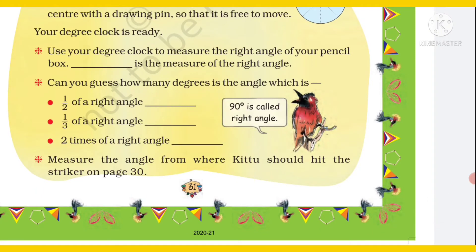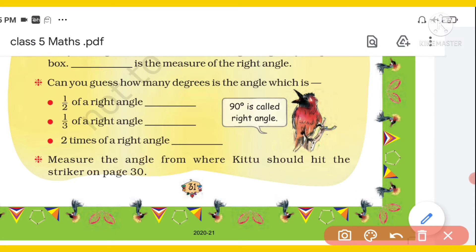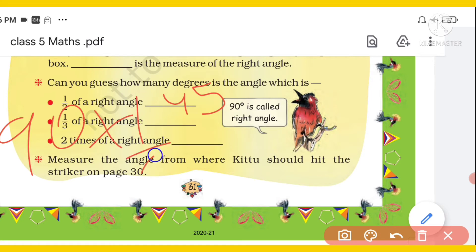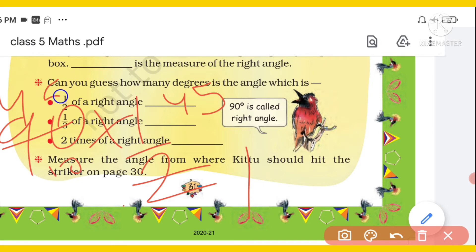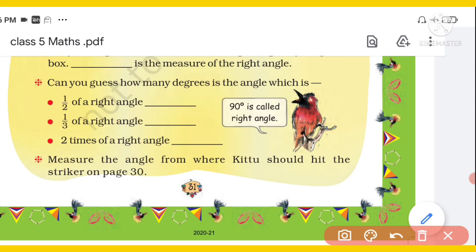Next question: can you guess how many degrees is the angle which is half of a right angle? Right angle means 90 degrees. Half of 90 is 45. You can also calculate it as 90 × 1/2 = 45. So we will write here: 45 degrees.